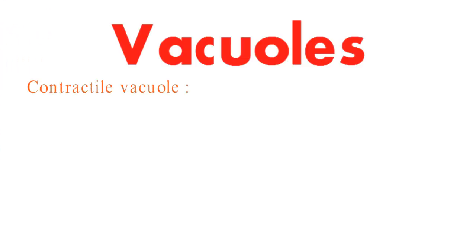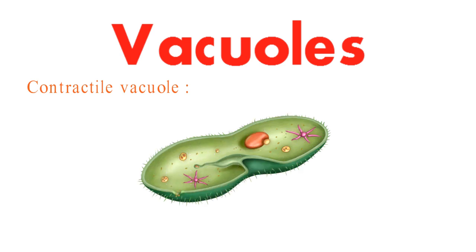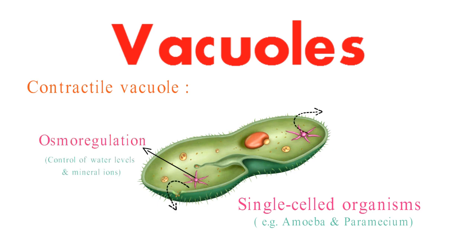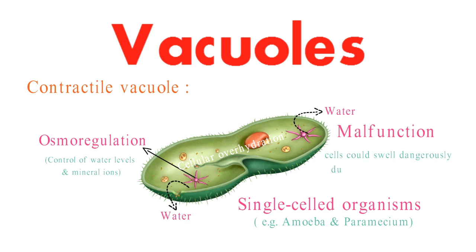The contractile vacuoles found in some single-celled organisms offer a masterclass in osmoregulation. By efficiently expelling excess water, these vacuoles prevent cellular over-hydration. However, if these vacuoles were to malfunction, cells could swell dangerously due to water accumulation.